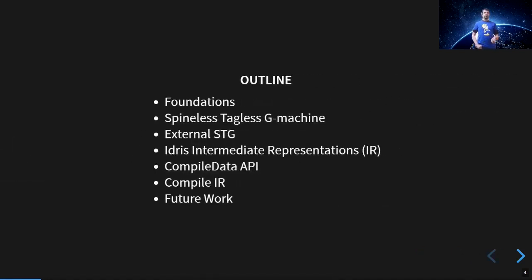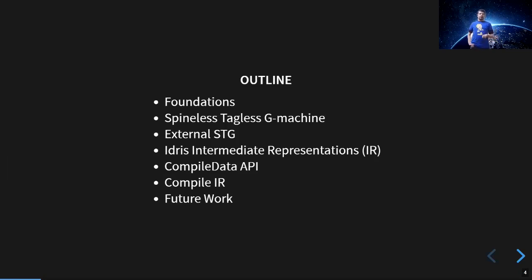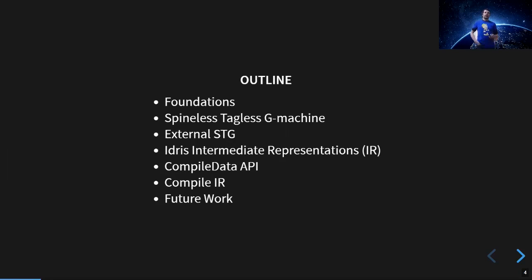So the outline of the talk: some foundations about functional programming compilers and theory, some words on the STG machine, an introduction of the external STG project — which is basically GHC with a twist — an introduction to the architecture of the Idris compiler and its different intermediate representations, an introduction to the compiler data API, and how to compile the IR.